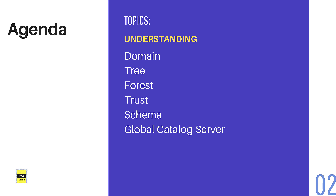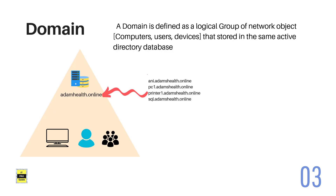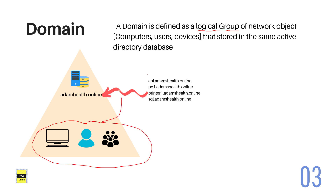The first one is: what is a domain? A domain is defined as a logical group of network objects. Objects are the computers, users, and devices. The objects of an organization in an Active Directory are stored in the Active Directory database and they are logically grouped by a domain.